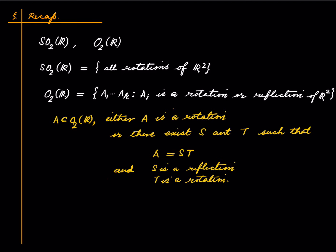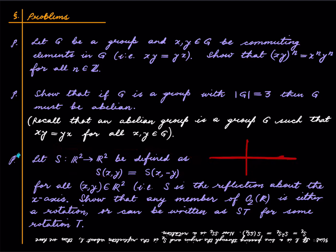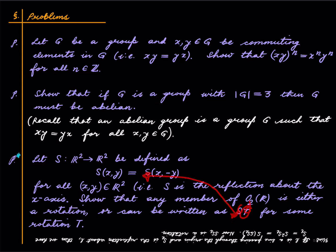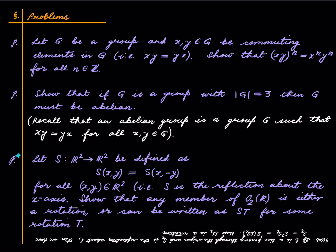We need this today, and in fact we need a stronger version, which is given as a star-marked problem. The star mark is not because this is hard, but because I will use it. What we are saying is: suppose we have the reflection of R2 about the x-axis. Then every member of the orthogonal group is either a rotation, or it can be written as S composed with T, where S is specifically the reflection about the x-axis and T is some rotation. This is stronger because before we just said S is some reflection, but now we manage with the reflection about a fixed line — the x-axis.